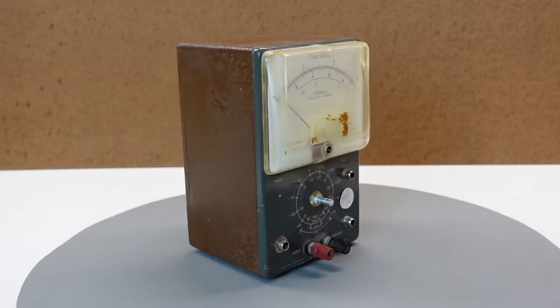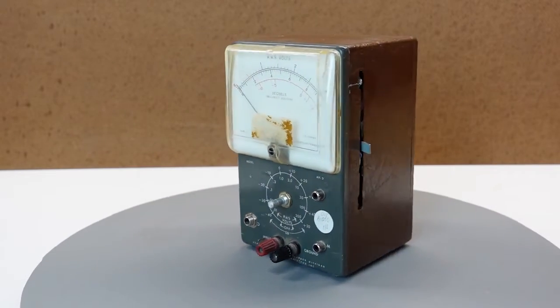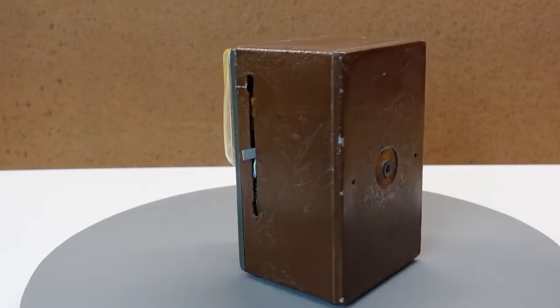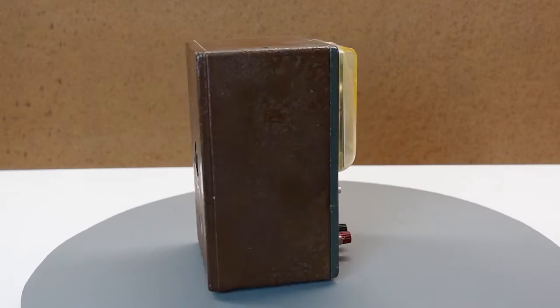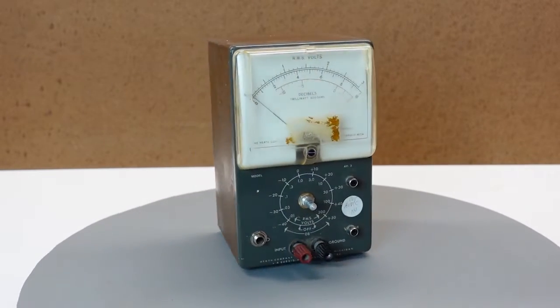There's two RCA jacks and a phono jack that have been added to the front panel. And most alarming, a long linear control, most likely a slide pot, has been added through a rough cut in the side of the case.